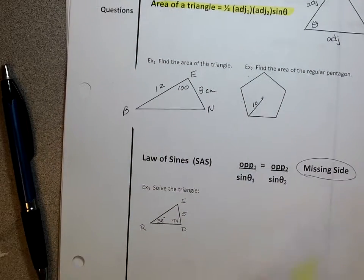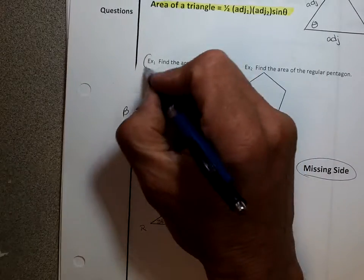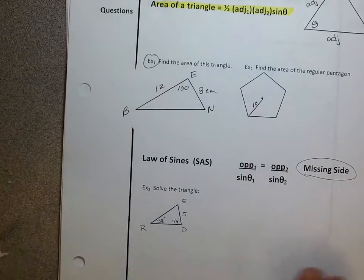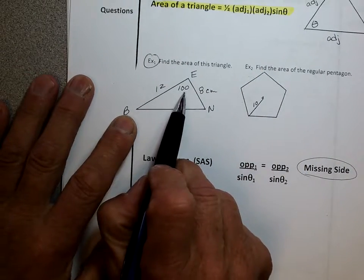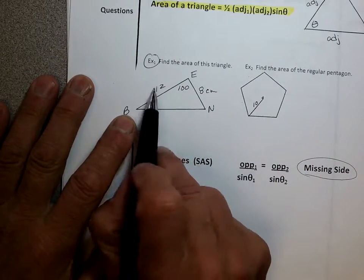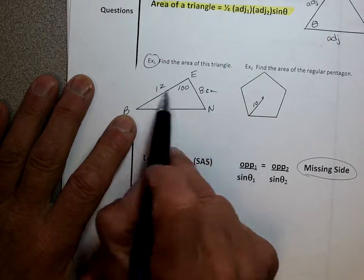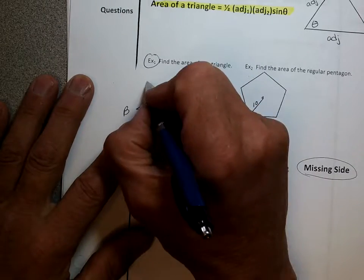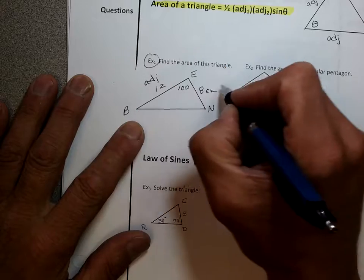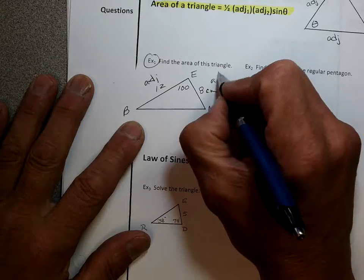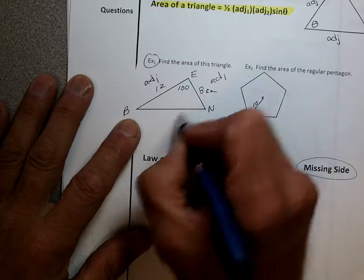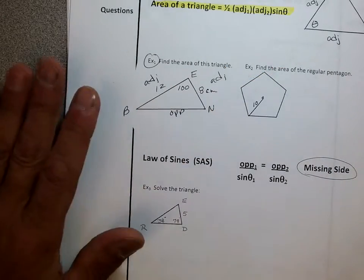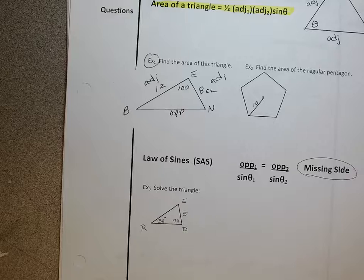So let's do example one — find the area of this triangle. So here's my angle. Both these two sides are next to that — these are the adjacent sides. That's my adjacent and that's my adjacent. This would be my opposite side, but we don't care about it in this problem.